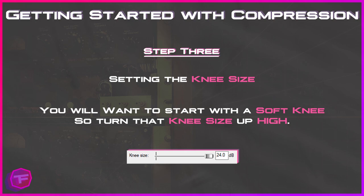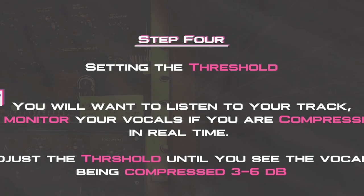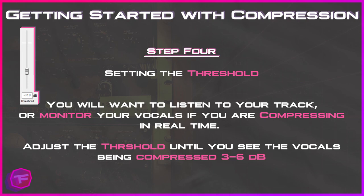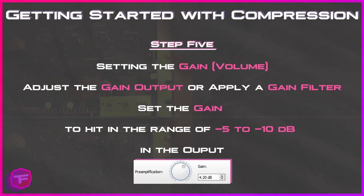You can do anywhere from 10 to 24 decibels, or whatever your program allows — I suggest a fairly soft knee, so turn that knee size up. Step four: setting the threshold. Listen to your track or monitor your vocals if compressing live, and adjust the threshold until you see the vocals being compressed down three to six decibels. Record an audio signal without any compression, then apply compression until it's being compressed in the range of three to six decibels — decreasing that volume by three to six decibels.